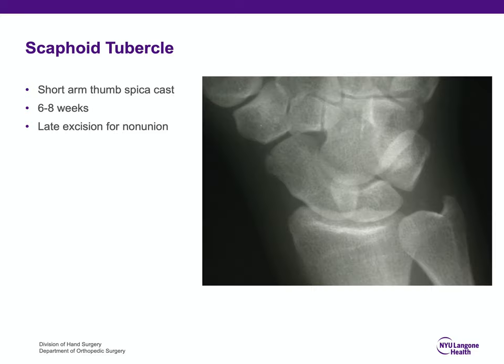The scaphoid tubercle fracture is generally an innocuous fracture — the best scaphoid fracture to have. I generally put patients into a short arm thumb spica cast for six to eight weeks, and by the time the cast comes off they're generally asymptomatic. If the fracture does not heal — which is uncommon but does happen in a small percent — the treatment would be late excision for non-union.